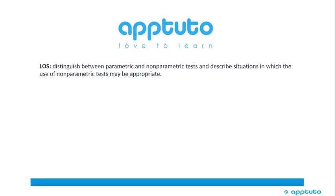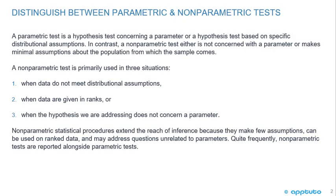This LOS distinguishes between parametric and non-parametric tests and describes situations in which the use of non-parametric tests may be appropriate. A parametric test is a hypothesis test concerning a parameter, or a hypothesis test based on specific distributional assumptions. In contrast, a non-parametric test either is not concerned with a parameter or makes minimal assumptions about the population from which the sample comes.